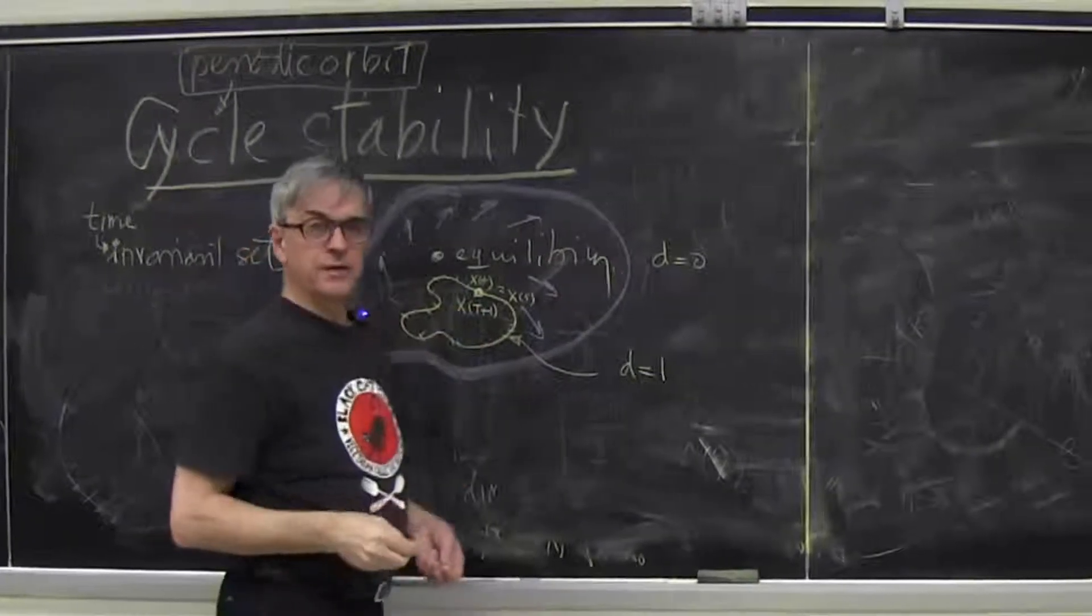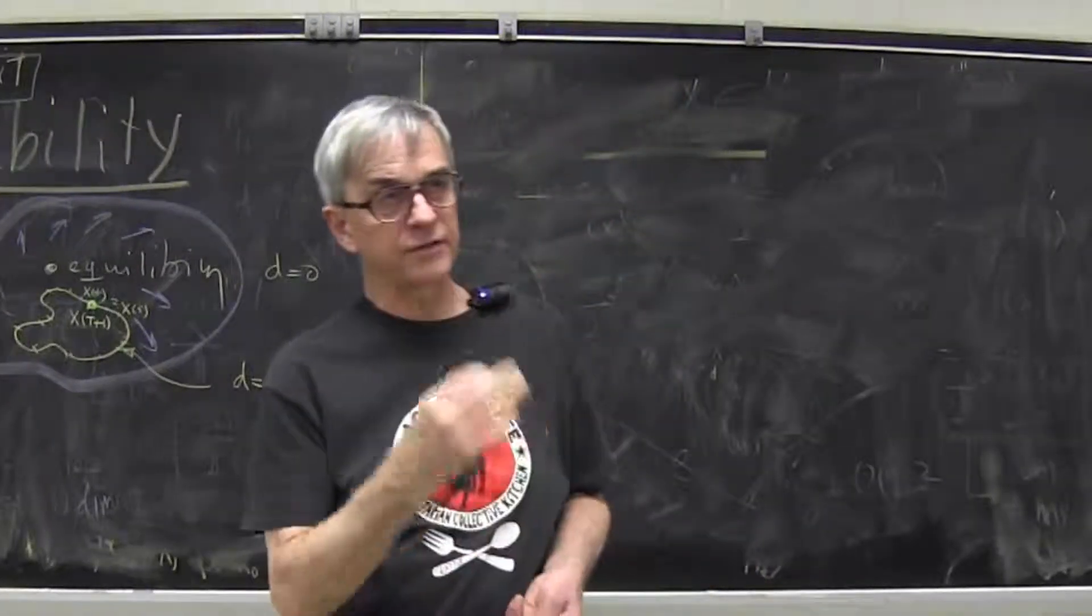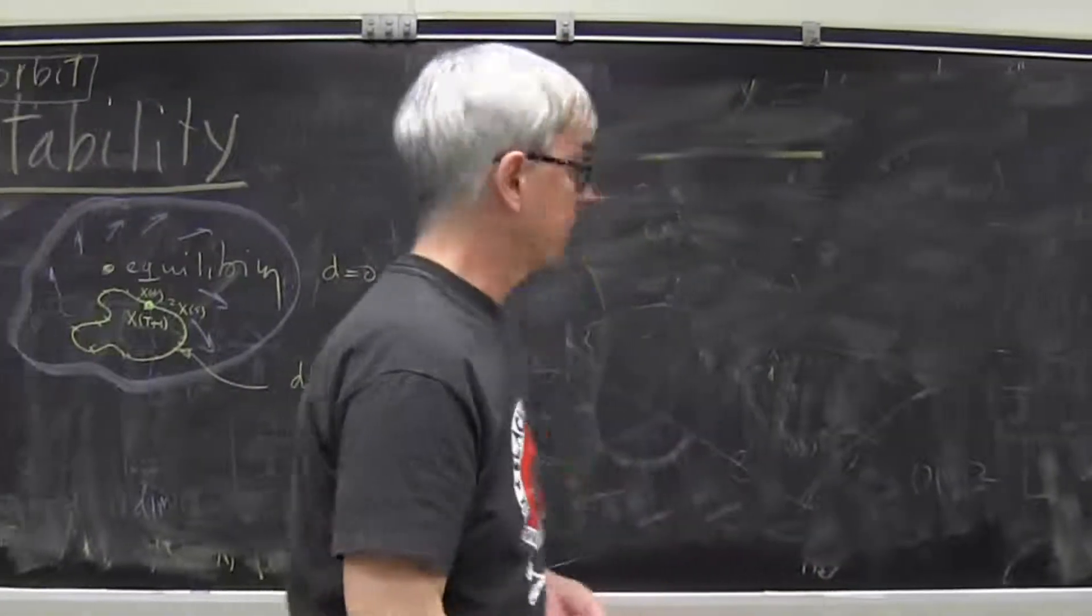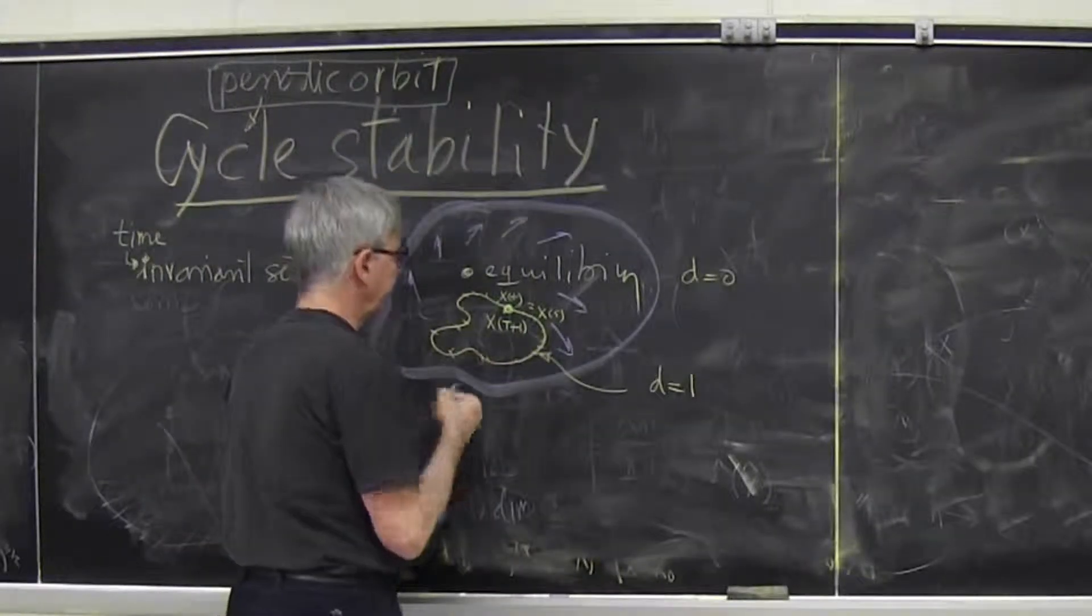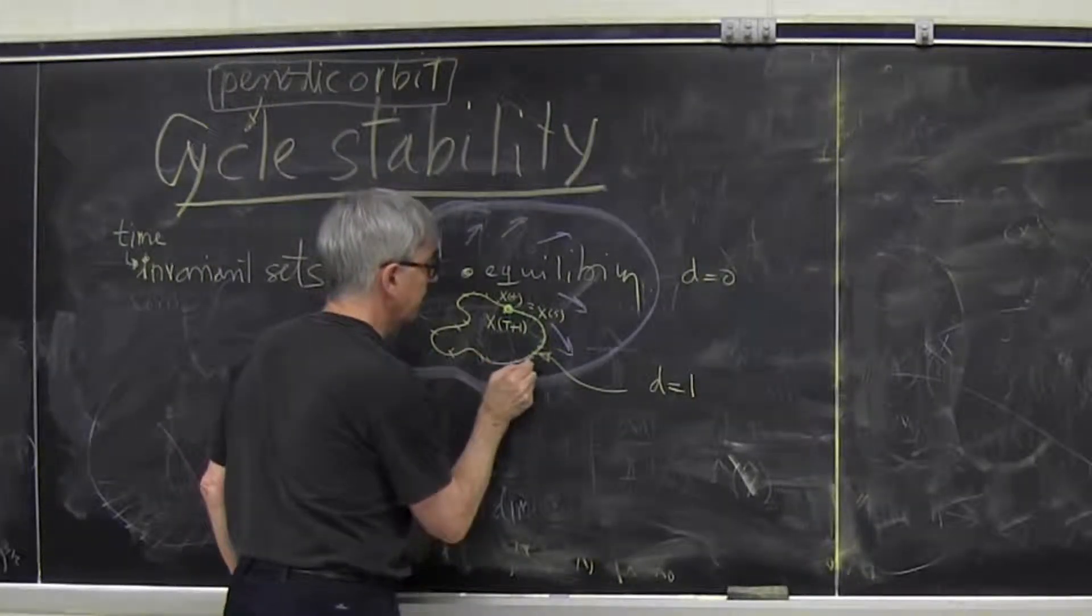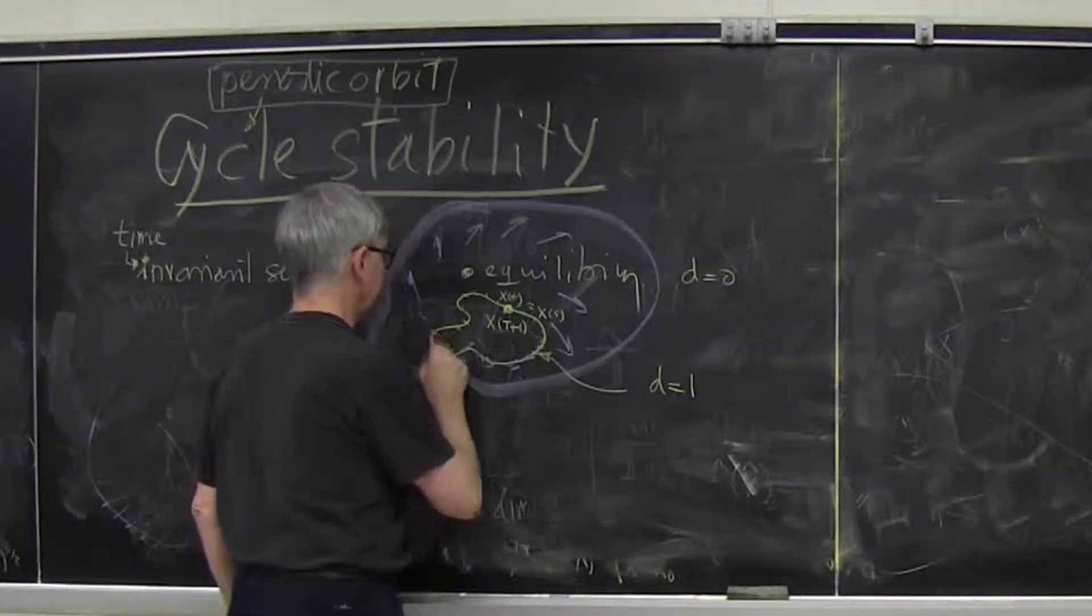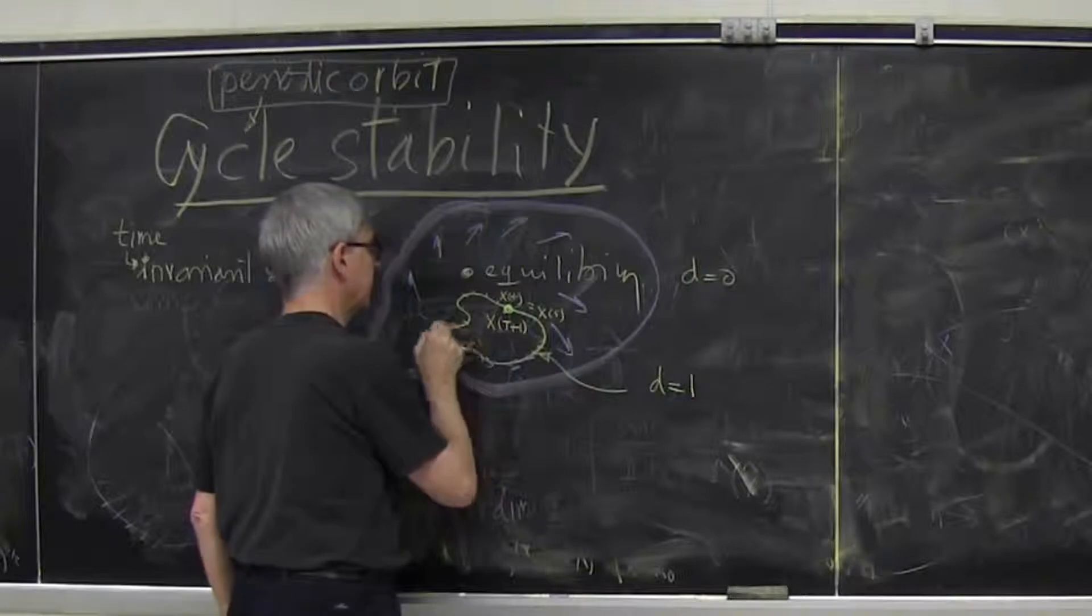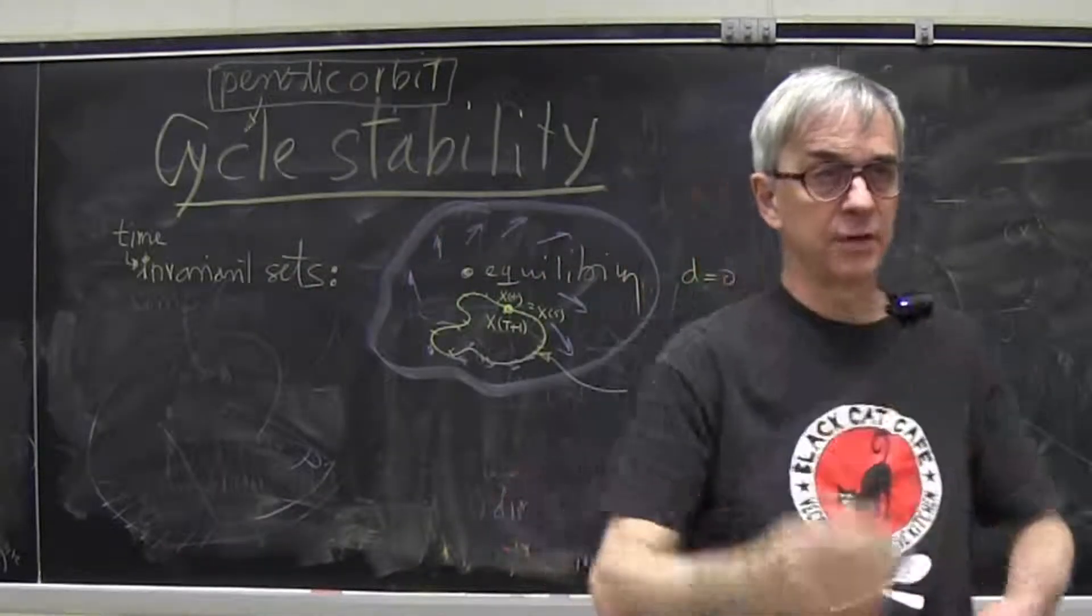And the velocity field should be non-zero every place, because if it's zero, that's called something else, that's called a heteroclinic connection, that's not a periodic orbit. Periodic orbit is where everybody marches at different velocity at different times, but you can never catch up with the person in front of you or overtake them, because that would be a violation of determinism, you just couldn't do this.